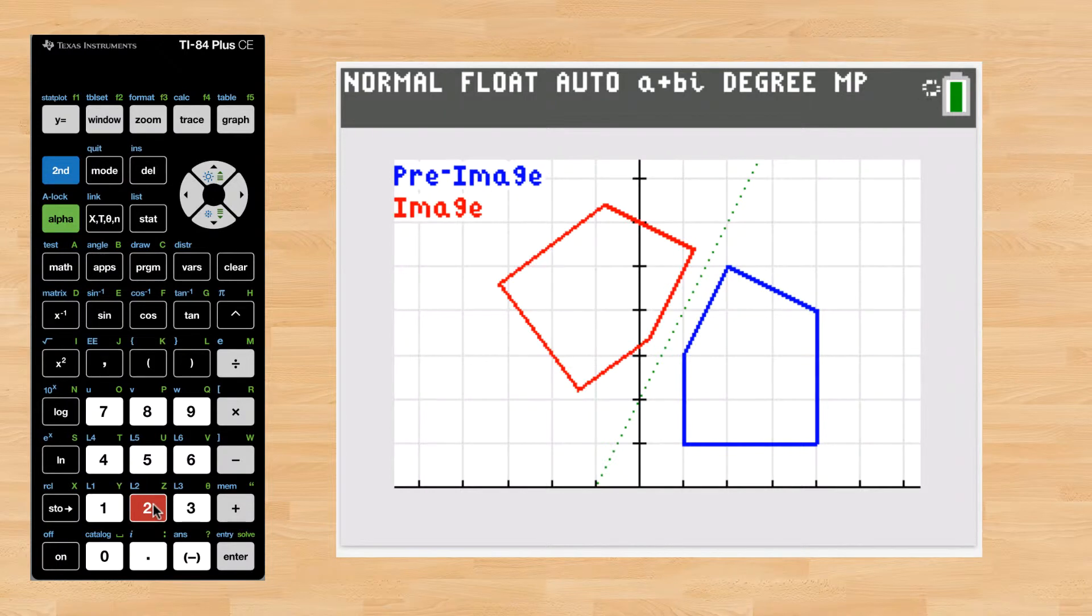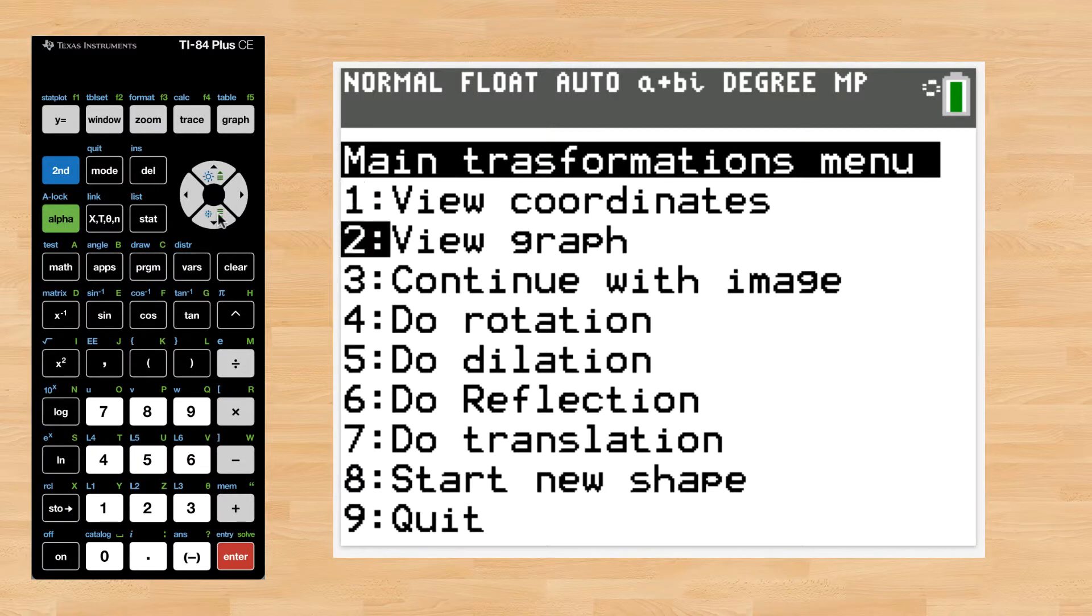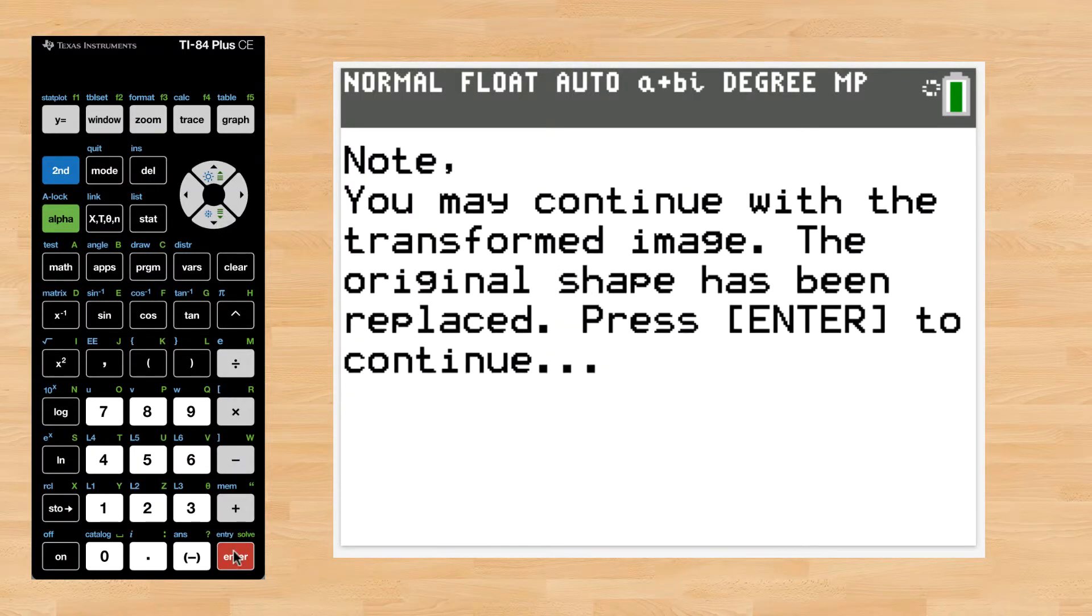Now, if you need to continue transforming that image, you can choose number 3, continue with image, and apply another reflection.